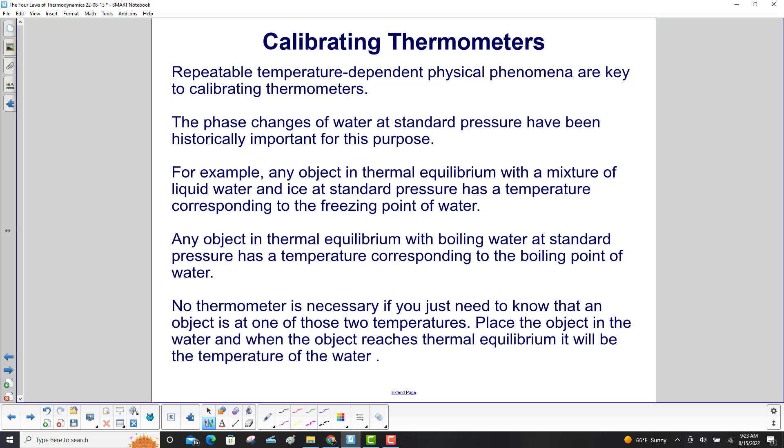Repeatable temperature-dependent physical phenomena are key to calibrating thermometers. The phase changes of water at standard pressure have been historically important for this purpose. Any object in thermal equilibrium with a mixture of liquid water and ice at standard pressure has a temperature corresponding to the freezing point of water. Any object in thermal equilibrium with boiling water at standard pressure has a temperature corresponding to the boiling point of water.